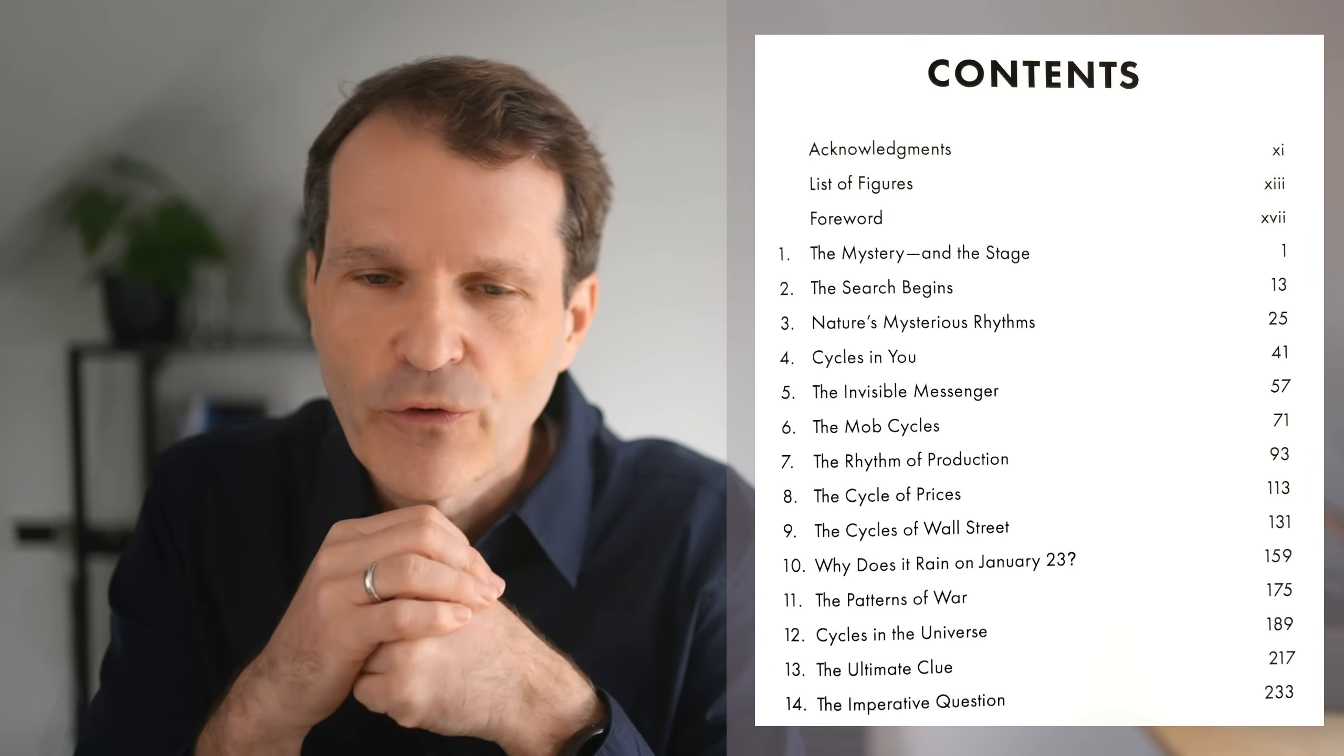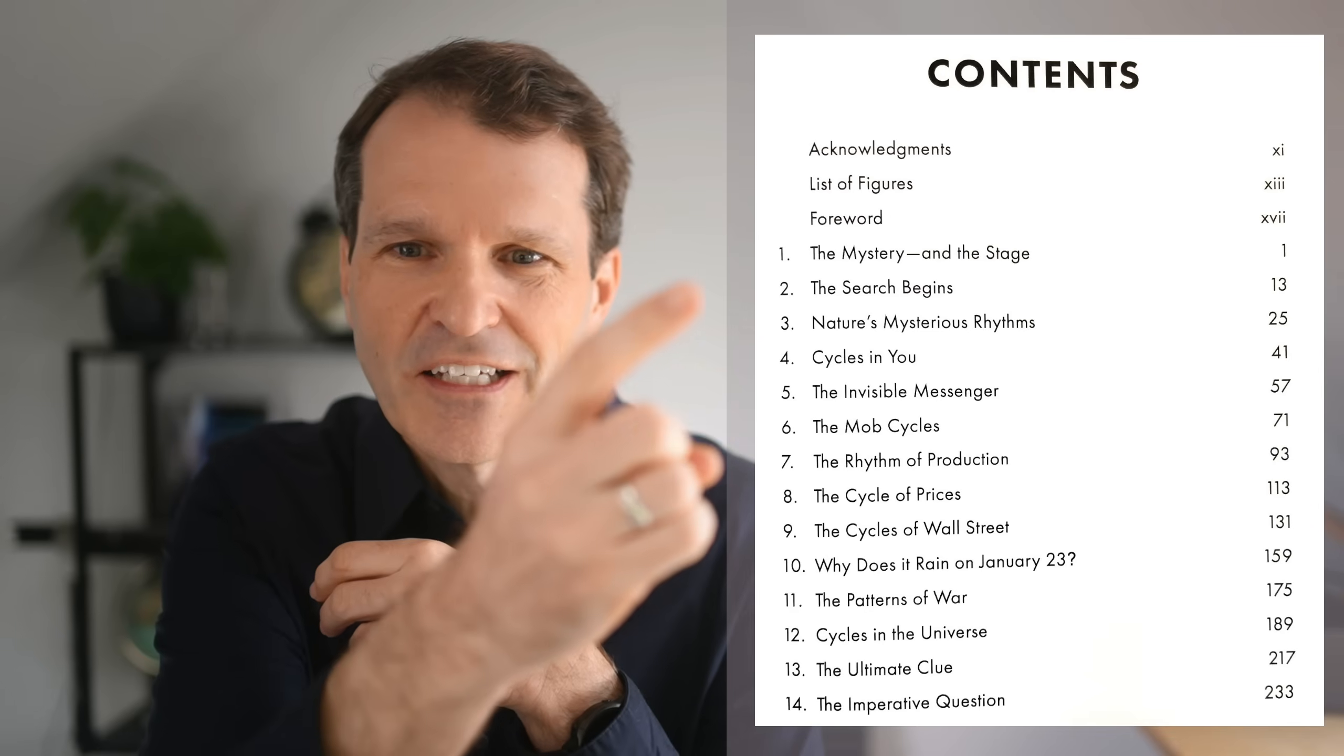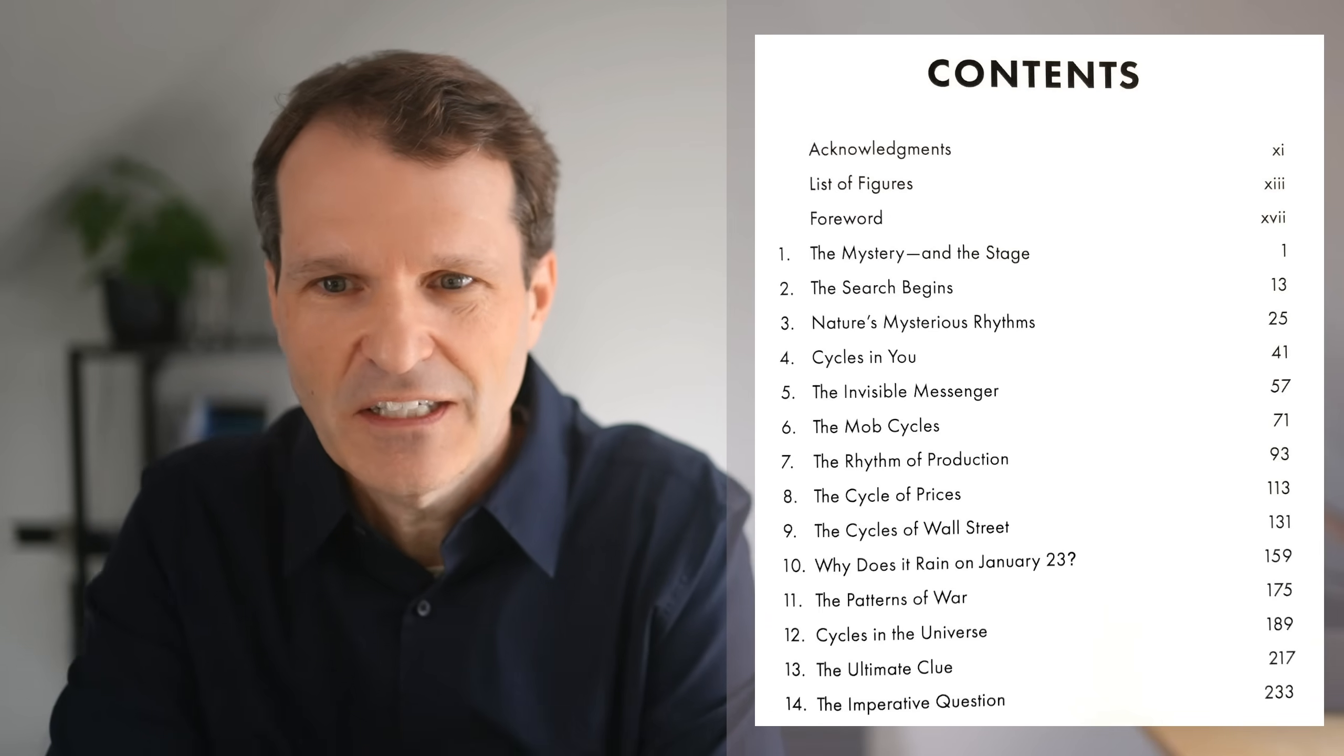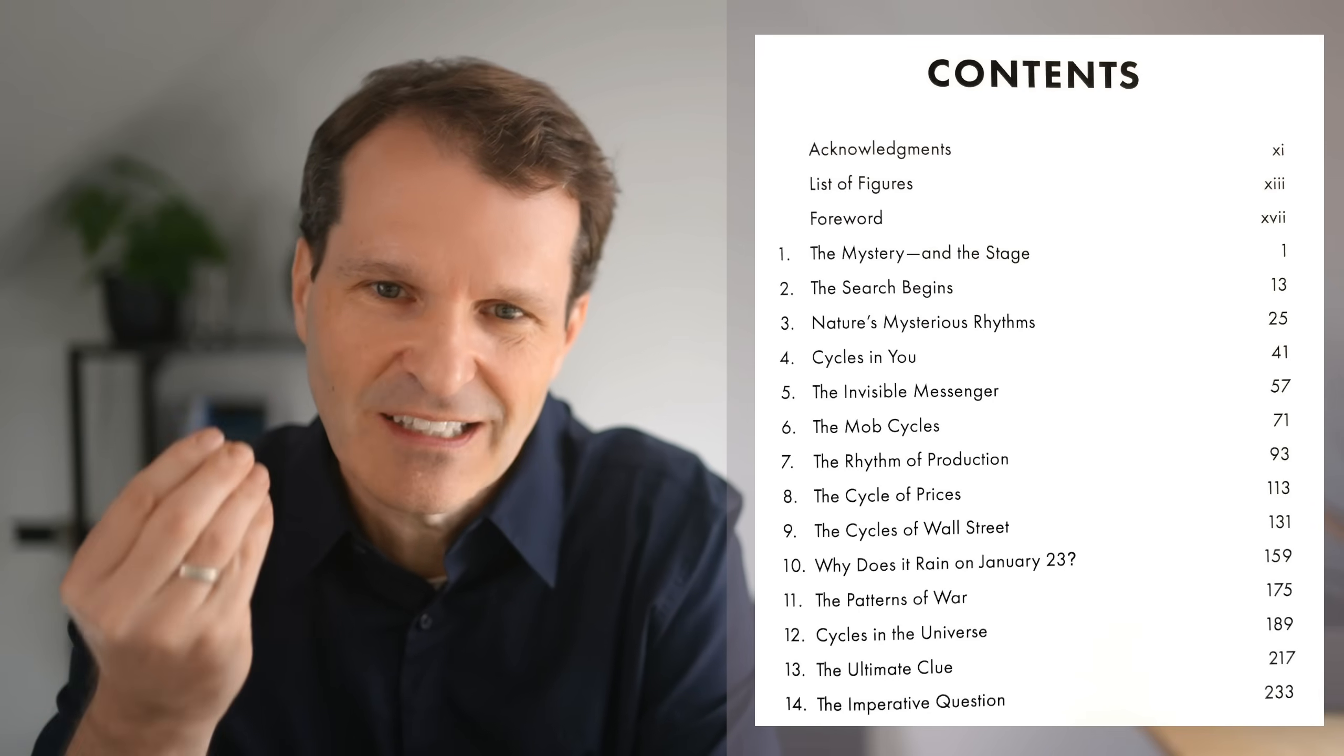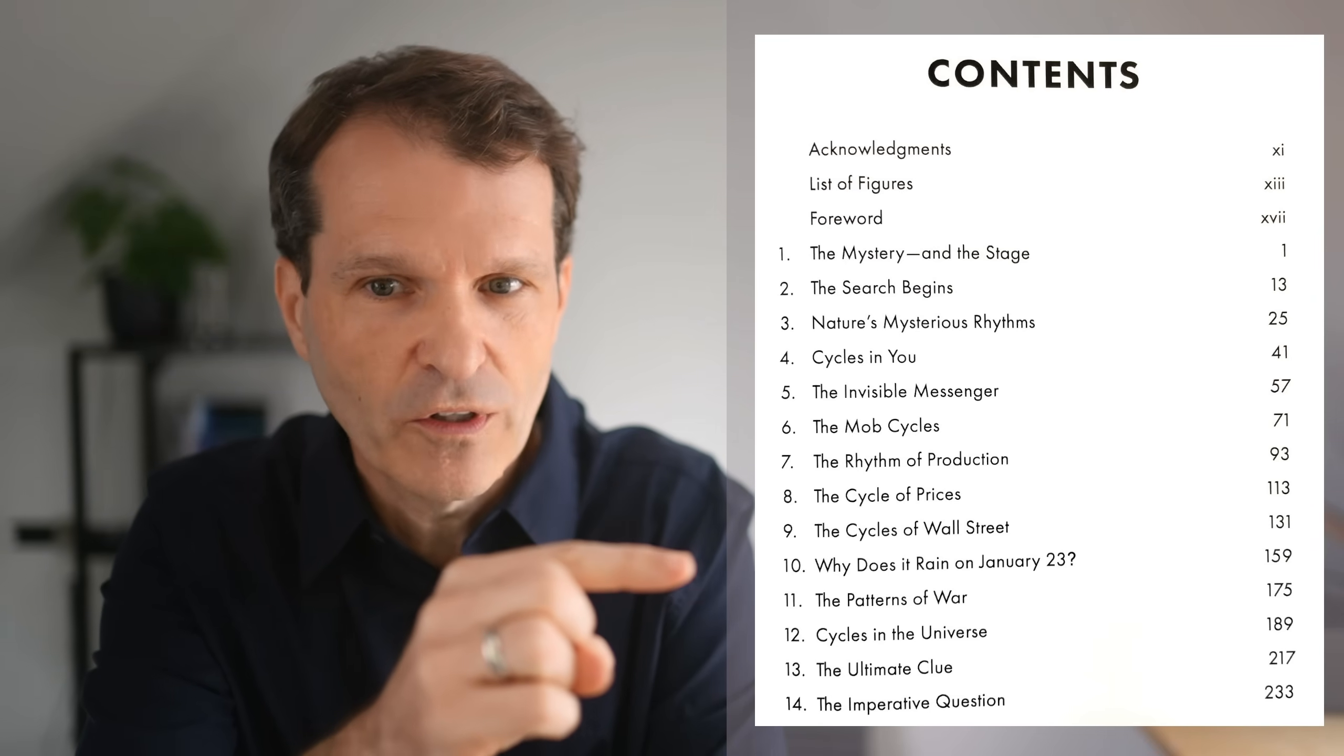Let's have a quick look at the key topics which are part of that book. First, you can have a look at the contents. It's full of 14 chapters related to individual cyclic moments. You see he's talking about his journey, his search of cycles, where he started his analysis and the experiences Edward R. Dewey had with cycles.